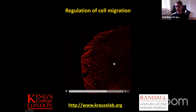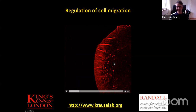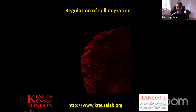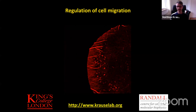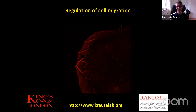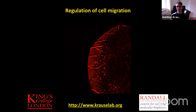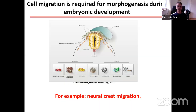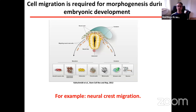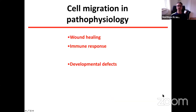Thank you very much for organizing such an amazing cell migration seminar series. My lab is interested in understanding how cells can integrate extracellular signals in order to achieve proper directional migration. Directional migration is required for morphogenesis during embryonic development — for example, neural crest migration. In other words, cell migration can make us, and later on in life, cell migration is also required for wound healing and immune responses.